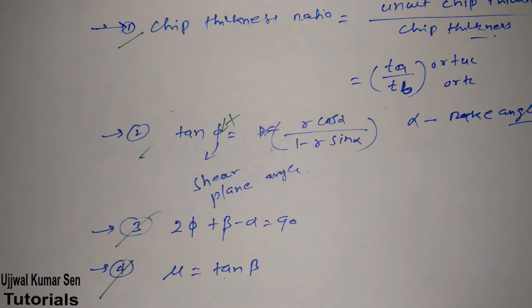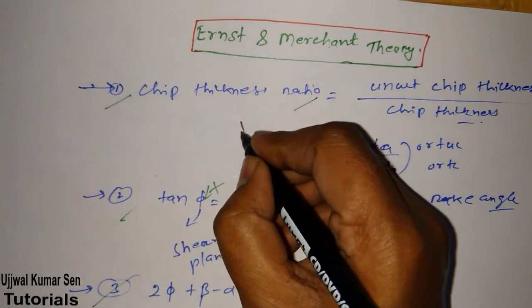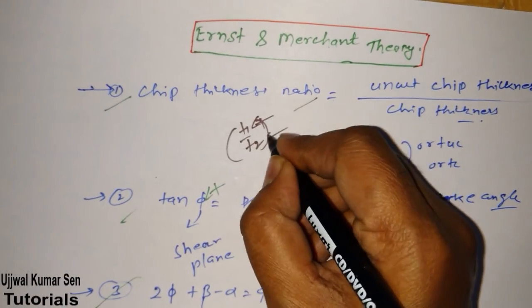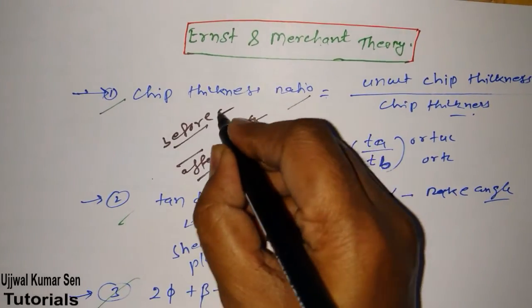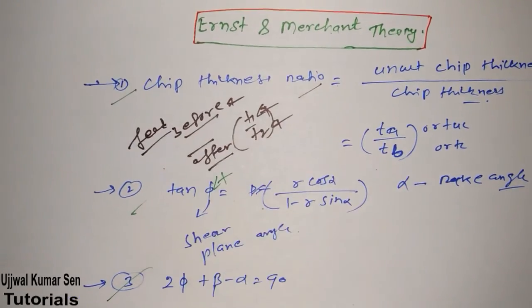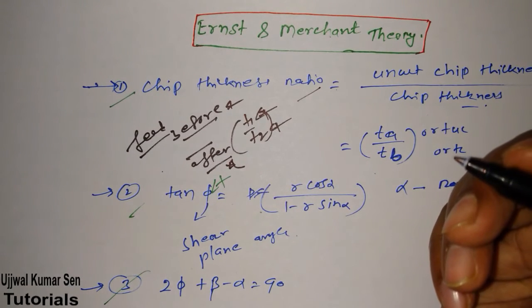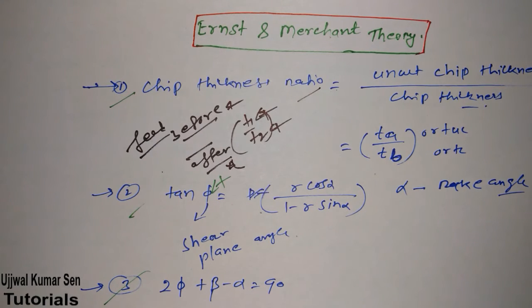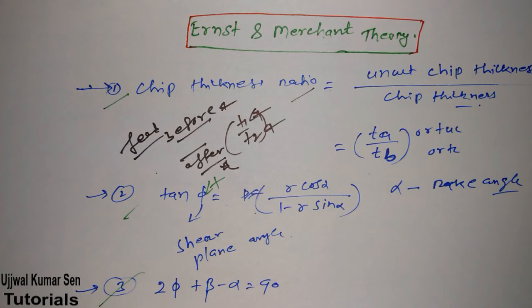One important thing where students often get confused: chip thickness ratio is sometimes written as t1/t2. Remember — t1 is before cutting (the feed, i.e., uncut chip thickness) and t2 is after cutting (the chip). You literally see the chip in front of the machine, especially on a lathe, after the operation is done.